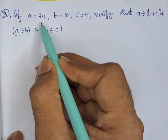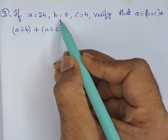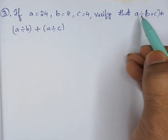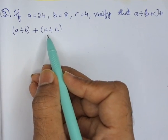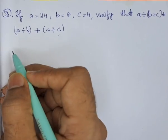Third problem: if a equals 24, b equals 8, c equals 4, verify that a divided by (b plus c) is not equals to a divided by b plus a divided by c.